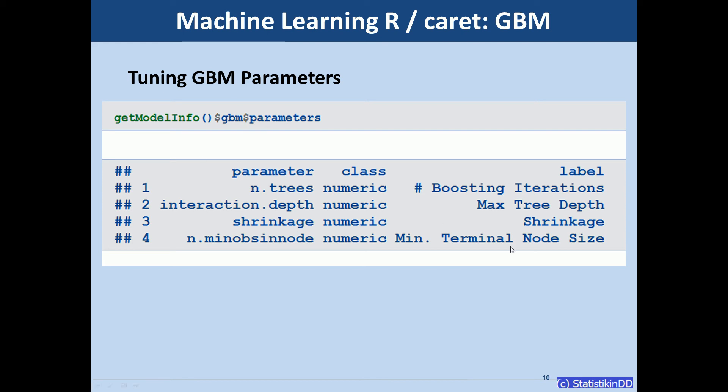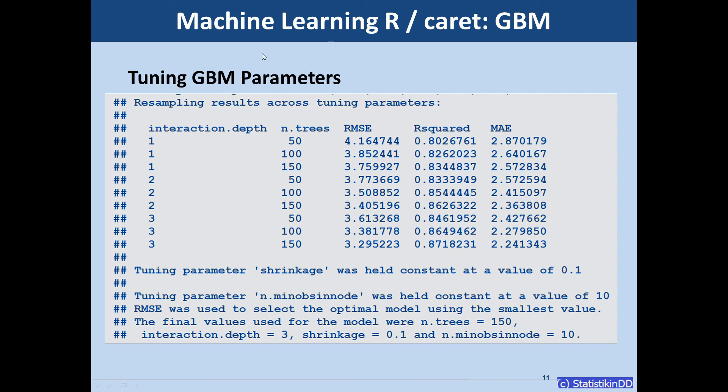And now we check the output that Caret gave us in training our GBM model. And here at the bottom we see that two of the four parameters were held constant. The shrinkage parameter was held constant at 0.1, and the minimum number of observations per node was held constant at 10.